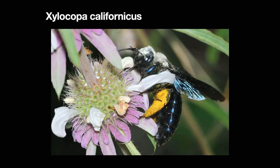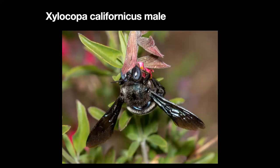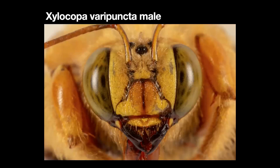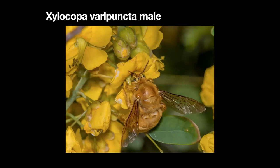Here's a Xylocopa californica male — you can tell them by their big eyes. This is nectar thievery — it's going up to a salvia and thrusting its head into the back of the corolla to get nectar. There's no way the bee can fit into the tubular blossom. Here you have another interesting carpenter bee — a female Xylocopa tabaniformis. Here's the male — they're sexually dimorphic. Studies in recent years have found that males generate scents from their thorax which are supposed to attract females.